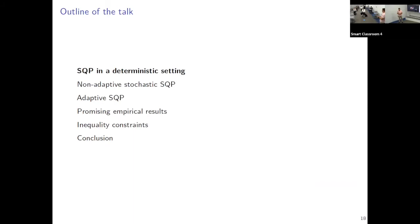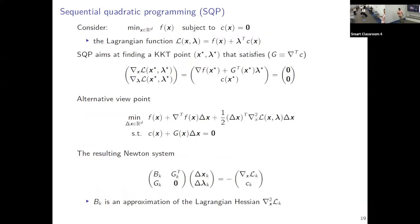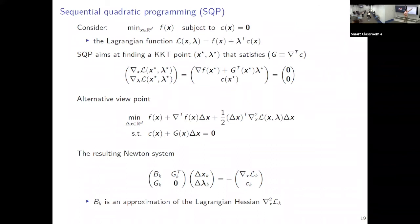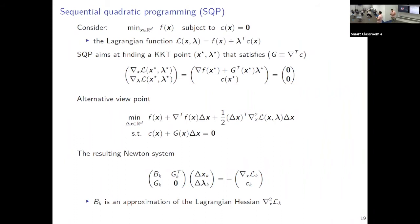Let me give a brief introduction to sequential quadratic programming in the deterministic case — what people knew 30 years ago about solving deterministic constrained problems. The problem is just like before: we have an objective and a constraint, but here we can obtain a full gradient. For notational purposes, we use the Lagrangian function: objective plus Lagrange multipliers times the constraint. We want to find a KKT point, satisfying that the gradient of the Lagrangian equals zero — a stationary point of our objective.